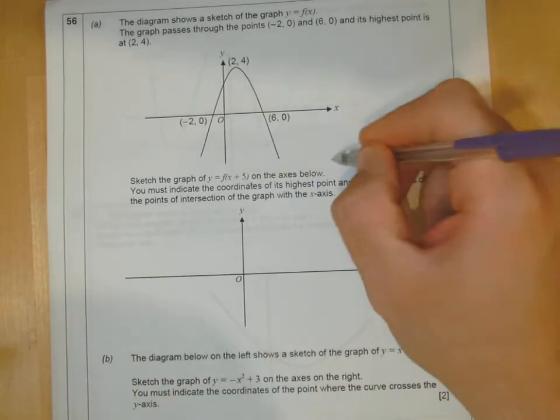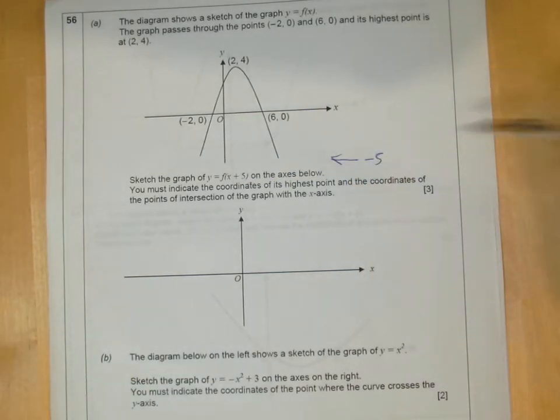So remember, in bracket of x, the x-axis, you've got to go this way. So you've got to go backwards 5.